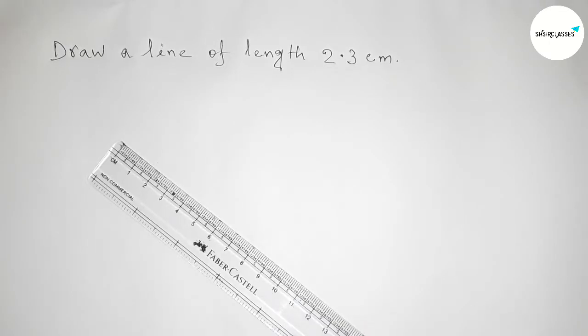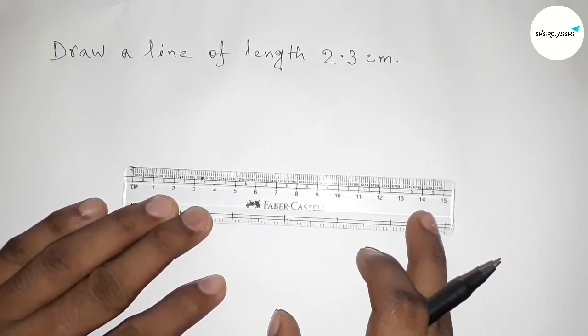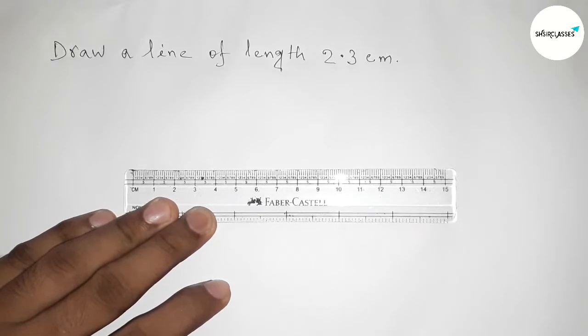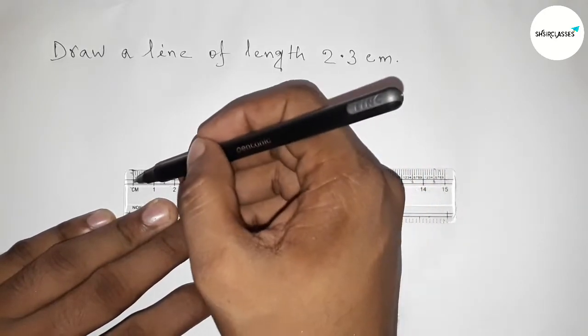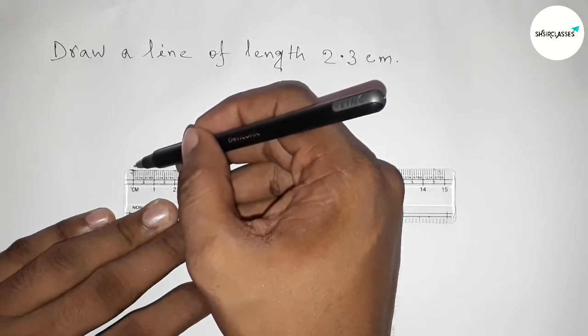First of all, I'm going to use a scale and here I'm going to use a pen, but you have to use a pencil when you are going to draw this line. Okay, so now first counting the length. This is starting at zero.